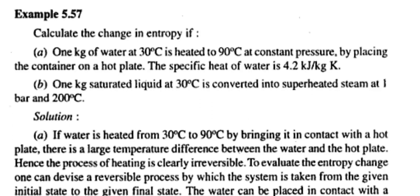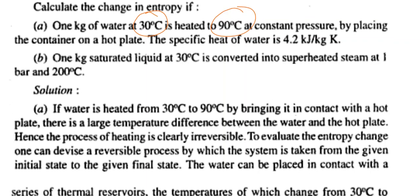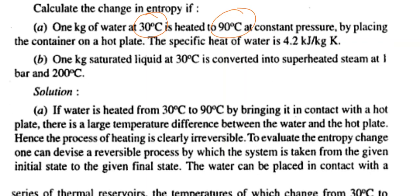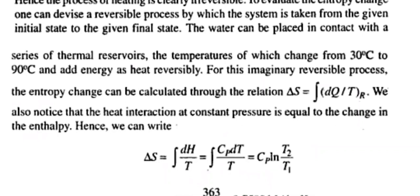Part B: One kg of water liquid at 30 degrees centigrade is converted into superheated steam at 1 bar and 200 degrees centigrade. We need to find the change in entropy for both cases. When transferring heat from 30 to 90 degrees centigrade, the process is irreversible unless it proceeds very slowly as a quasi-equilibrium process.